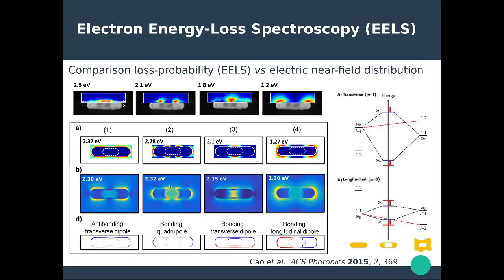Something very important to notice is that in EELS, for the second mode — appearing to be a bonding quadrupole mode — you see loss probability only on the outside of the nanorode, while you have electric fields inside the void at the air-silver interface. Similarly, for another particular mode, EELS shows a strong signal from the outside but no signal from the inside, which is opposite to what the electric field map shows — strong electric field inside the void and very small field on the outside. So it looks like there's some relationship between electric field and loss probability, but it's not a one-to-one match.